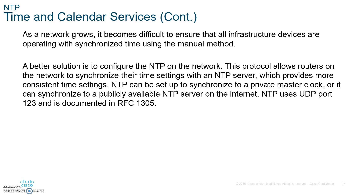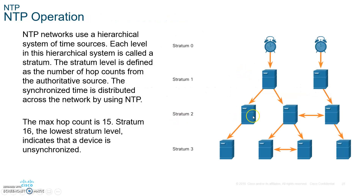NTP allows routers to synchronize their time settings with an NTP server using UDP port 123. Networks use a hierarchical system called stratums. Stratum zero is the actual global clock. Stratum one is your master NTP server, and all other devices synchronize to it. The stratum level is defined as the number of hop counts from the authoritative source. The maximum hop count is 15.